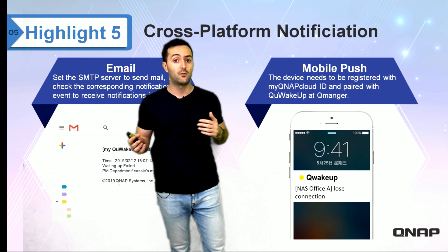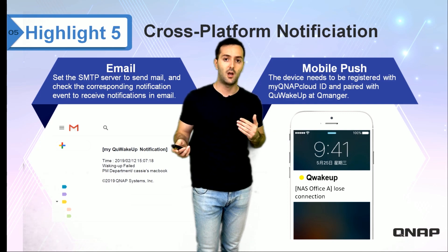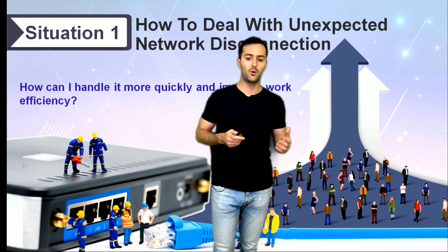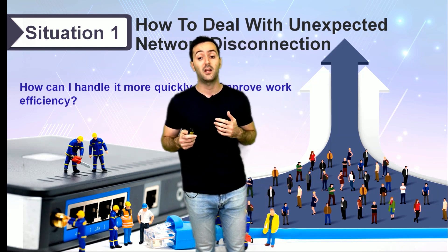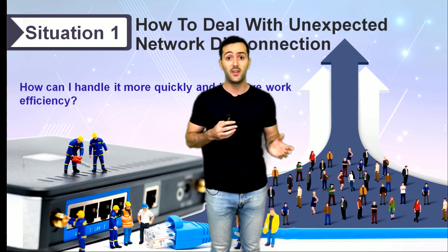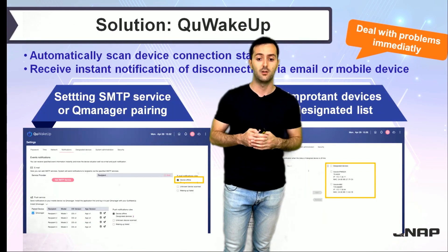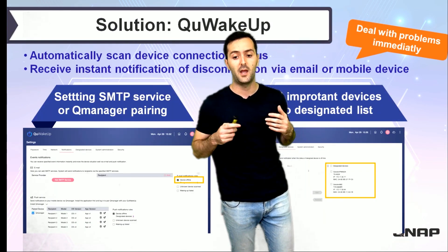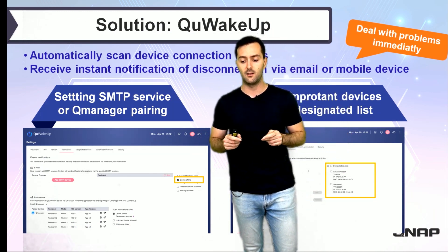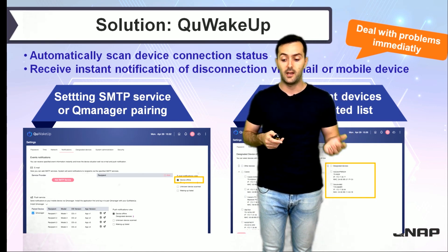You get notified if there is something going on like a loose connection or other interruptions happening in the network based on the device shutting down or waking up. We thought many times about how to deal with unexpected network disconnections. Qwakeup is the solution — it can automatically scan device connection status and instantly send notifications via email or mobile device.